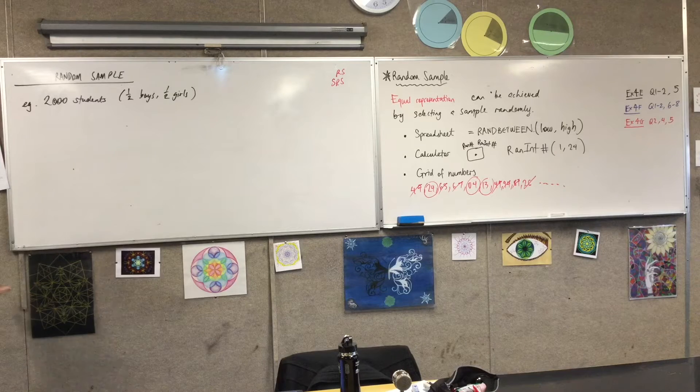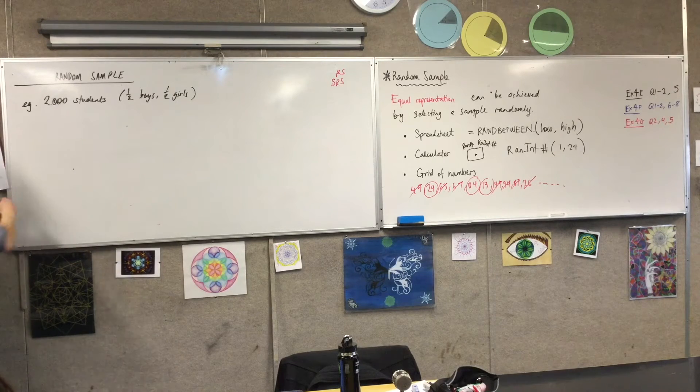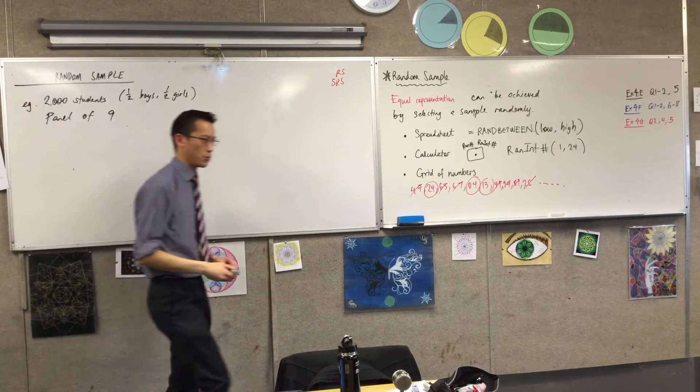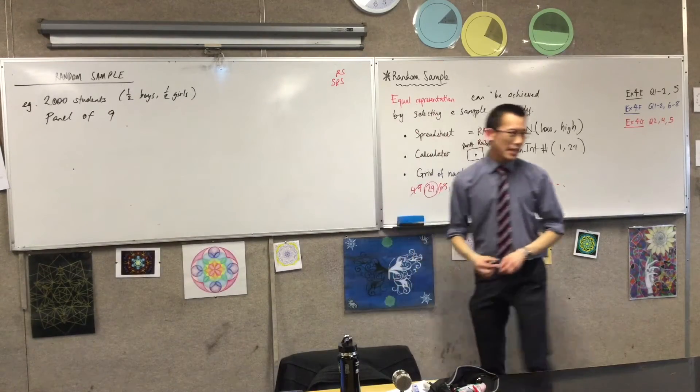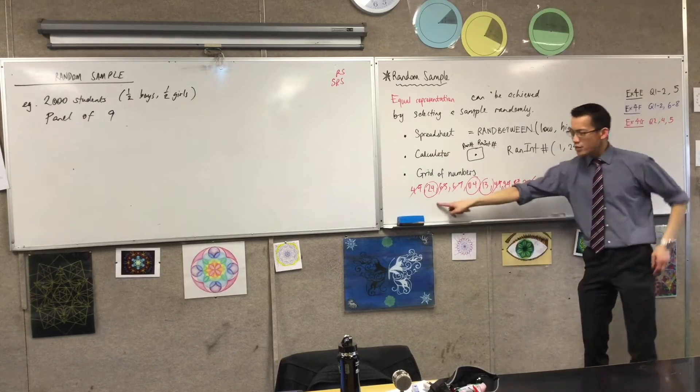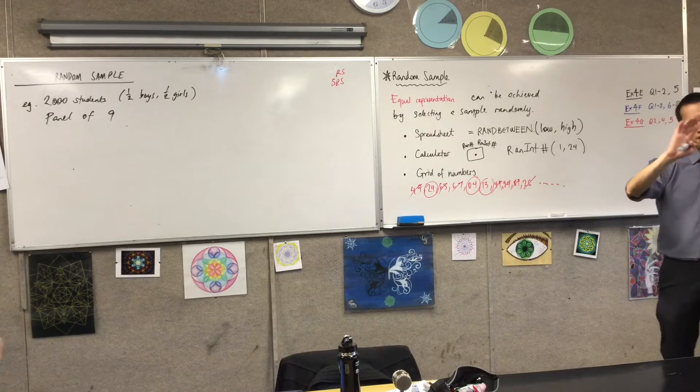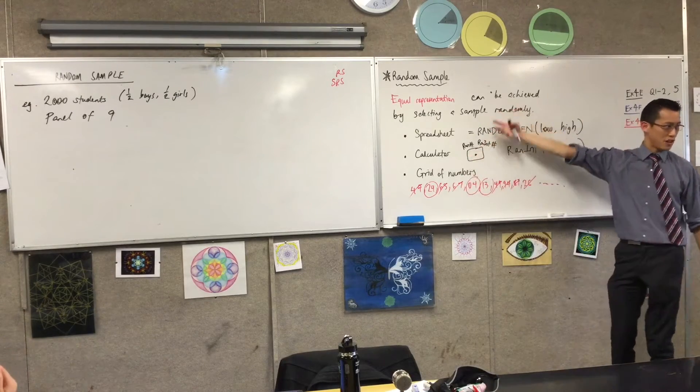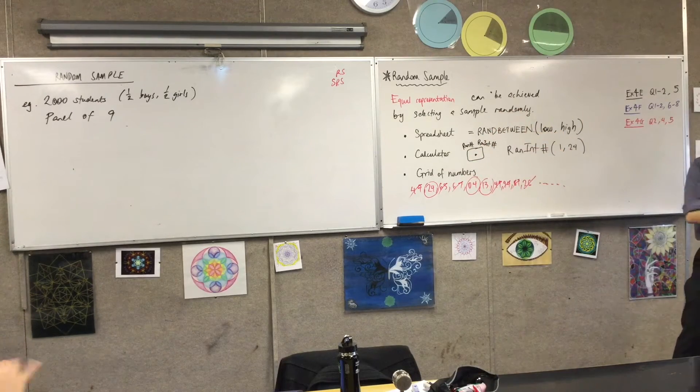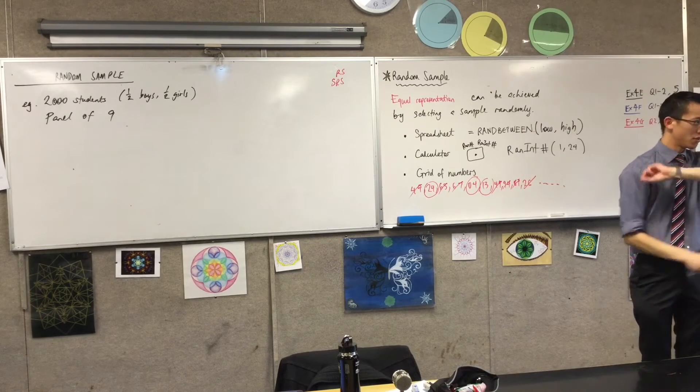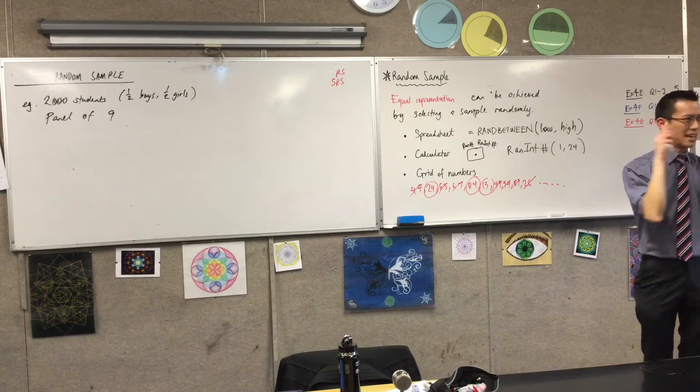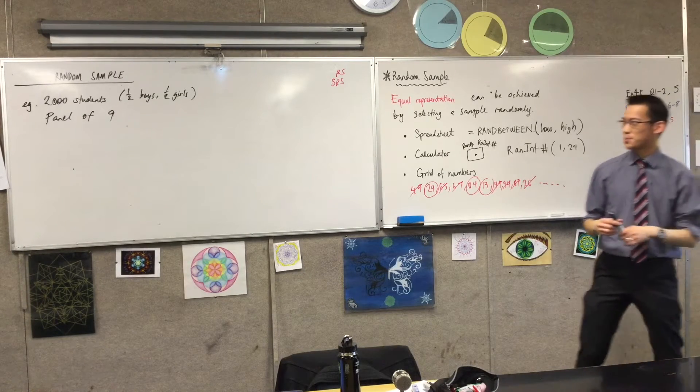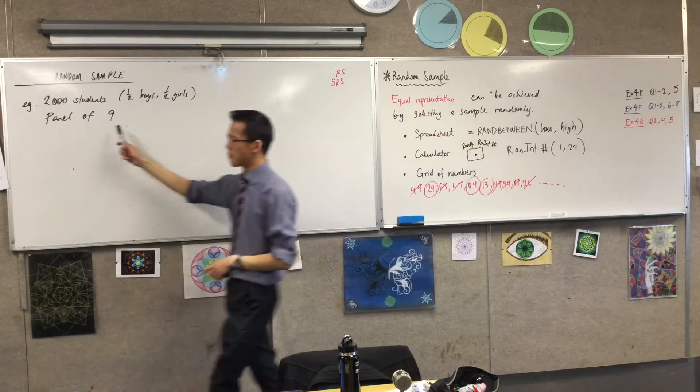Suppose I want to pick out of our school, I want a panel of nine. So, this is going to be my random sample. Now, interestingly, if I do something like this, give every single student in the school a number and then use our grid or our calculator or our spreadsheet to get numbers from one to 2,000. Panel of nine.